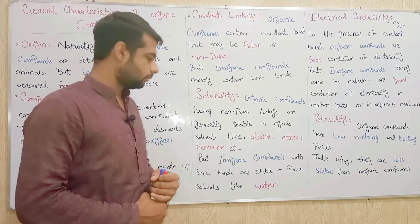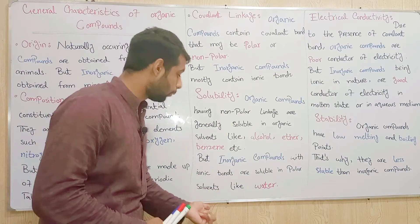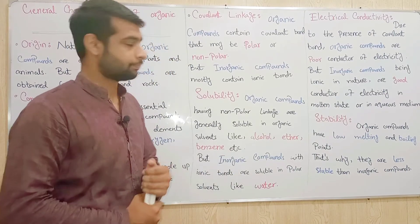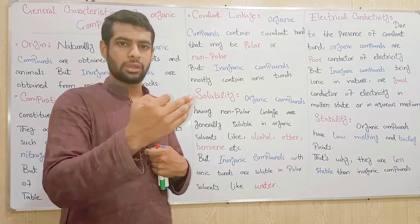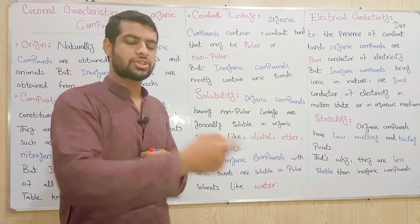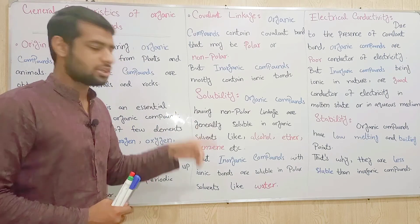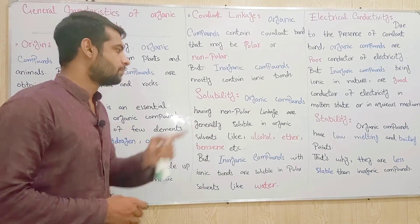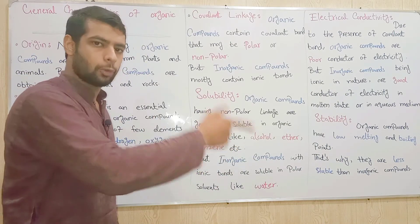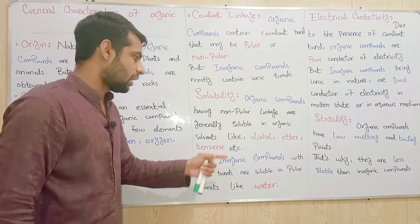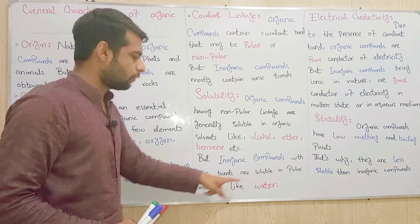Inorganic compounds with ionic bonds are soluble in polar solvents like water. We discussed previously that like dissolves like — polar dissolves in polar solvents and non-polar dissolves in non-polar solvents. This behavior is also shown in the solubility of organic and inorganic compounds. Organic compounds having non-polar nature dissolve in non-polar organic solvents.